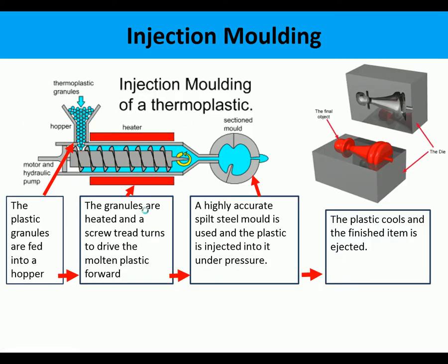So how does injection moulding work? The plastic granules are fed into a hopper. The granules are heated and a screw thread turns to drive the molten plastic forward. This is then injected into a highly accurate split steel mould, and the plastic is then allowed to cool. The temperature of the mould is controlled and the finished item is ejected. So these are the stages in injection moulding.